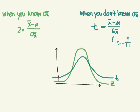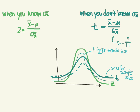Our estimated standard error came from the sample standard deviation over the square root of the sample size. That means the bigger the sample, the smaller the estimated standard error will be — so bigger samples have less variance. I've drawn three t-distributions here. The bigger the sample size, the more the distribution is clustered at the top with less variance. The smaller the sample size, the more flattened it gets and the more probability there is at the periphery. In fact, if you have a sample size of infinity, you actually get the z curve.